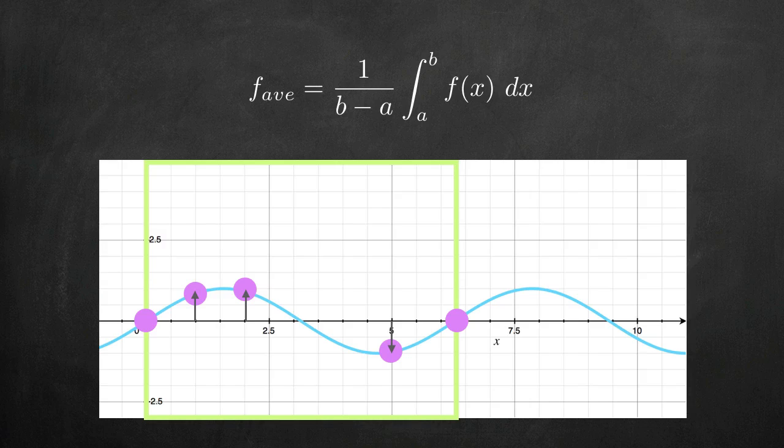If we use this formula, we'll get back a constant value, which we'll reveal for this function would be 0. If we draw the line y equals 0 over the top of our original function, we see that it does in fact appear to be the average of the function over the interval.